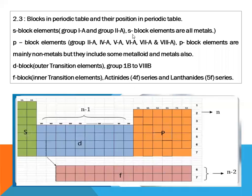Blocks in the periodic table and their positions: s block elements are at the left side corner of the periodic table. P block elements are present at the right corner. D block elements are present between the s and p blocks. At the bottom we observe the f block elements.